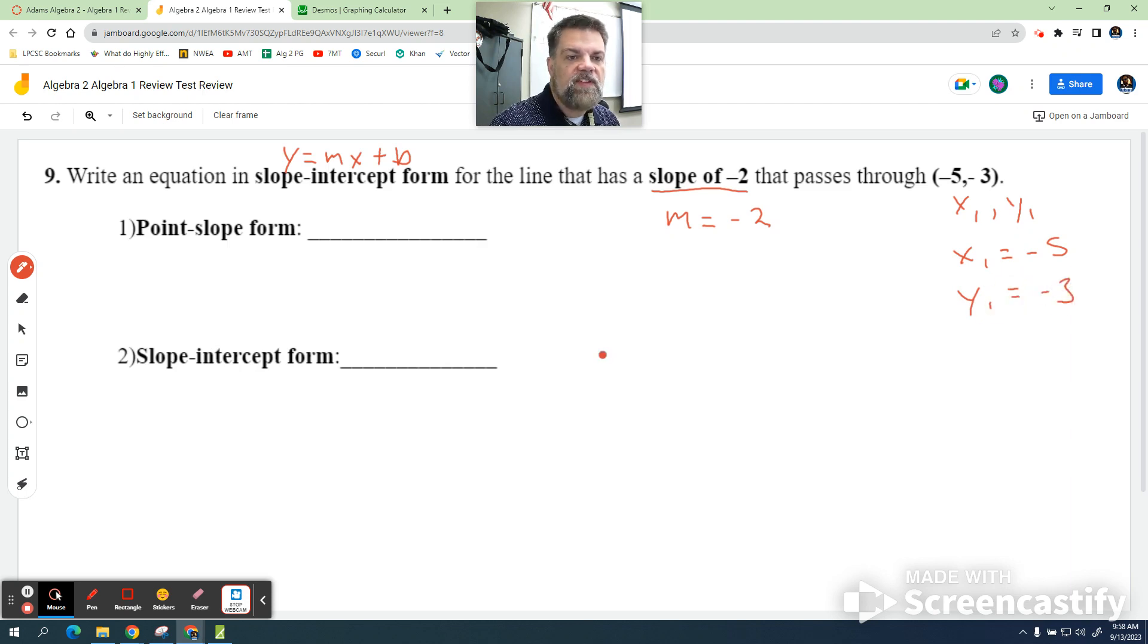So the point-slope form of this, I'm going to fill that in later, but over here to the side, I'm going to say y minus y sub 1 equals m times the quantity x minus x sub 1. This right here is what we call the point-slope form because we plug in a point and we plug in the slope. So there's a slight difference.